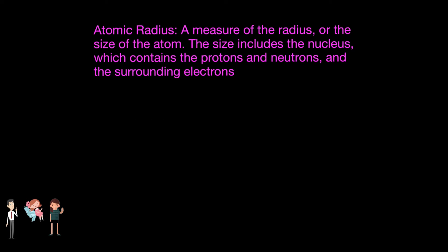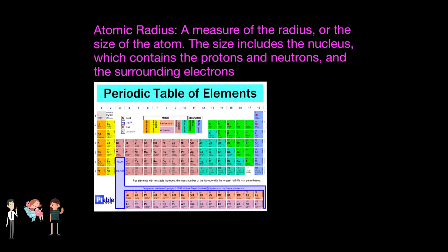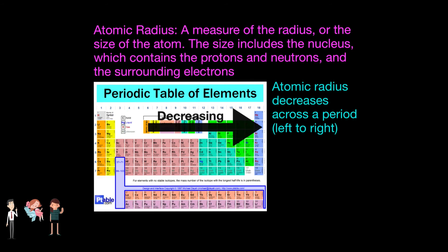Atomic radius is very easy to understand. It is quite literally a measure of the radius, or the size of the atom. The size includes the nucleus, which contains the protons and neutrons, and the surrounding electrons. Since the elements are arranged in the order of increasing protons, we can assume that the nucleus also increases in size across the table. Thus, the positive charge increases in the nucleus, causing the electrostatic attraction of the nucleus to also increase. Therefore, the valence electrons are pulled closer and closer to the nucleus as we go across the period, due to the increasing strength of the nucleus.